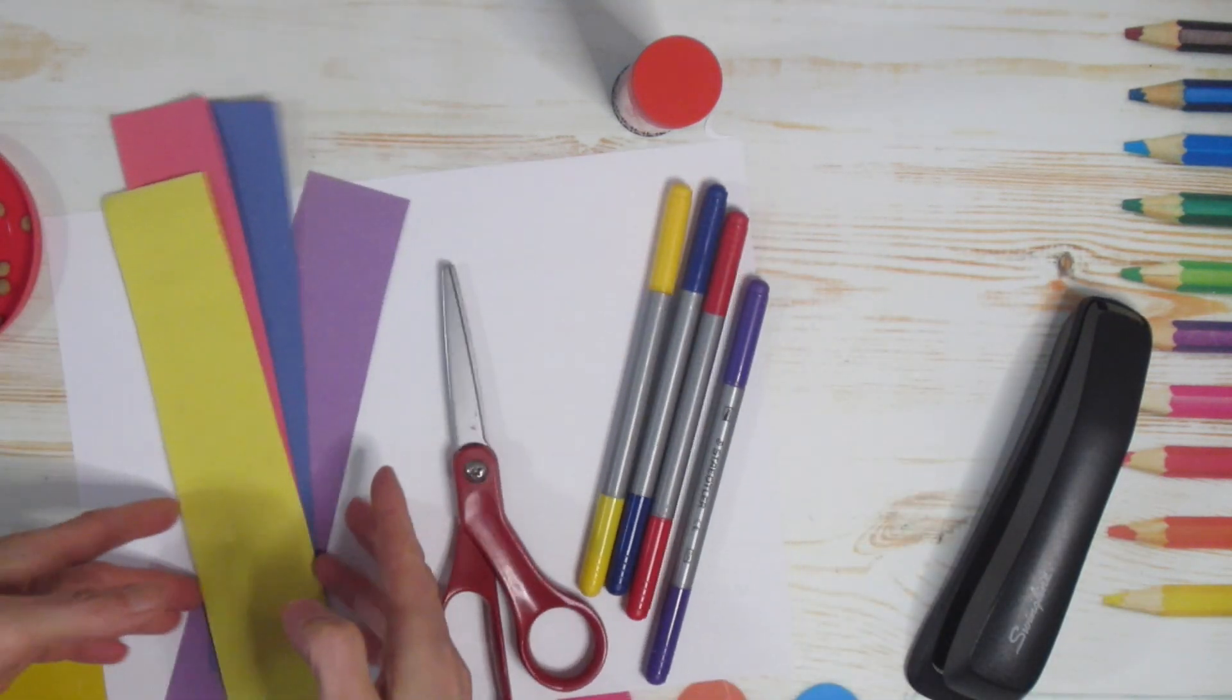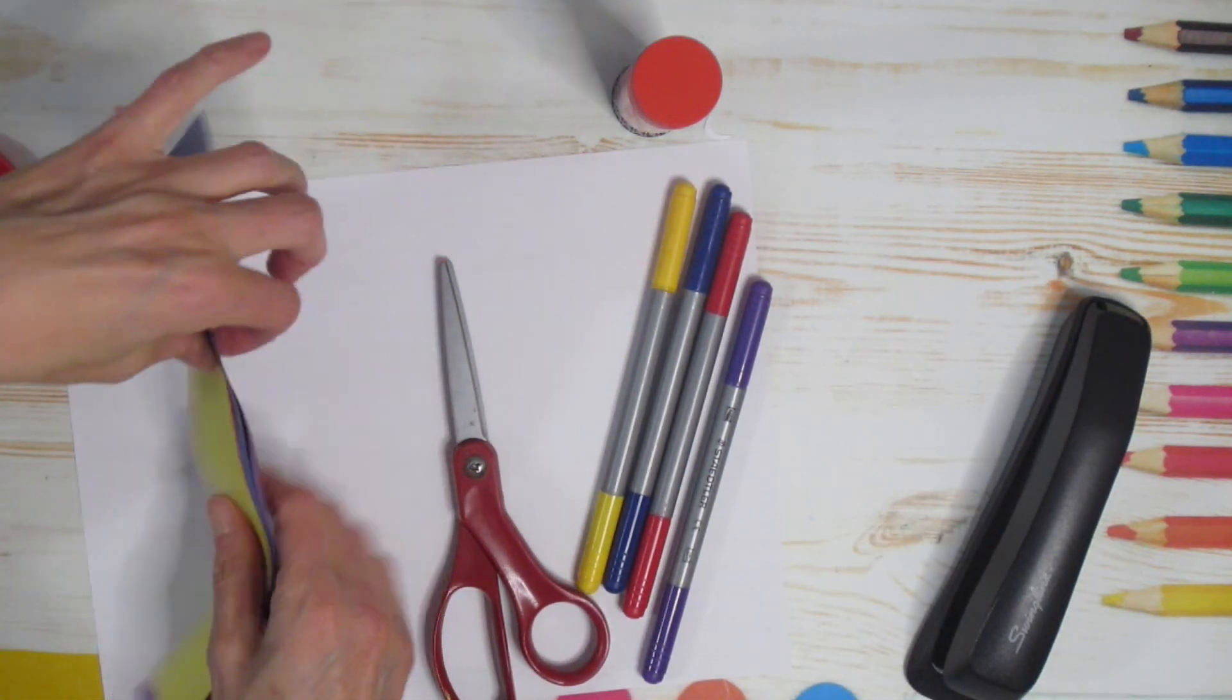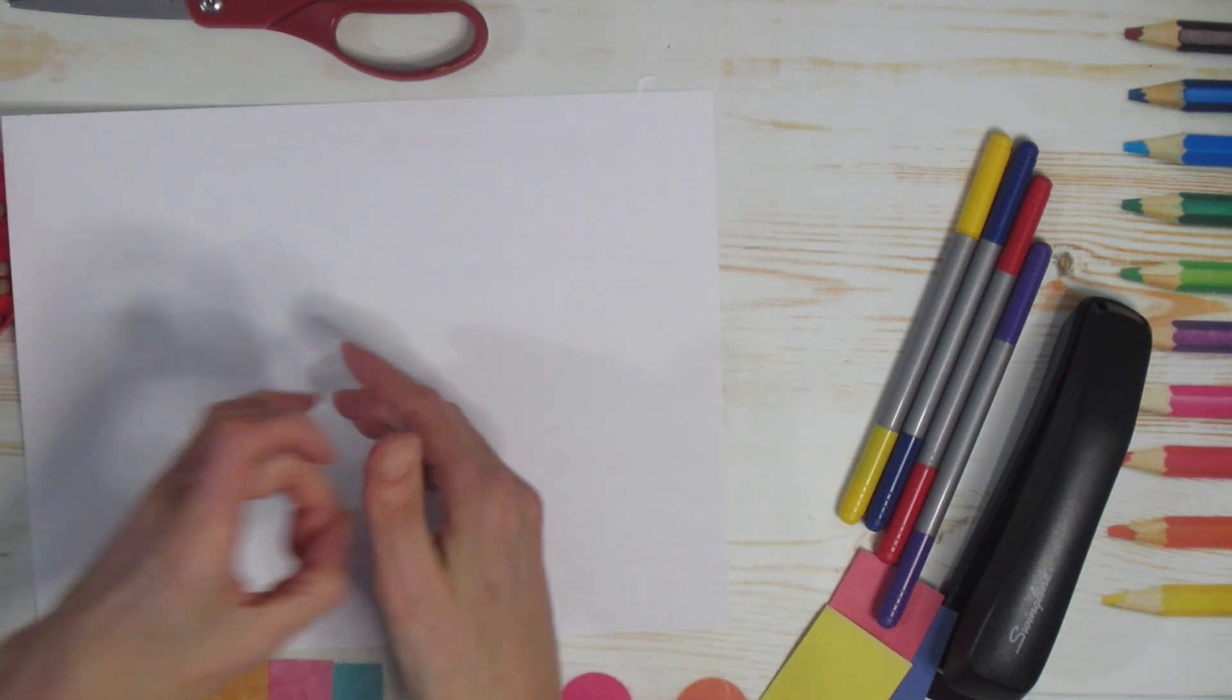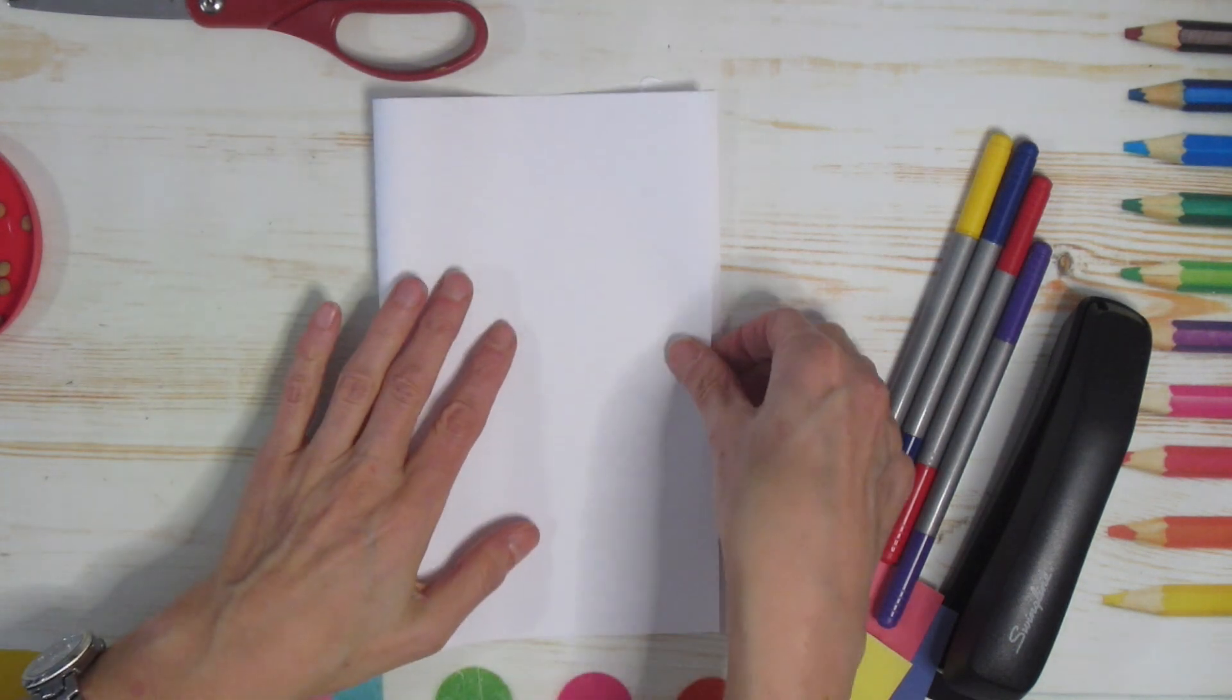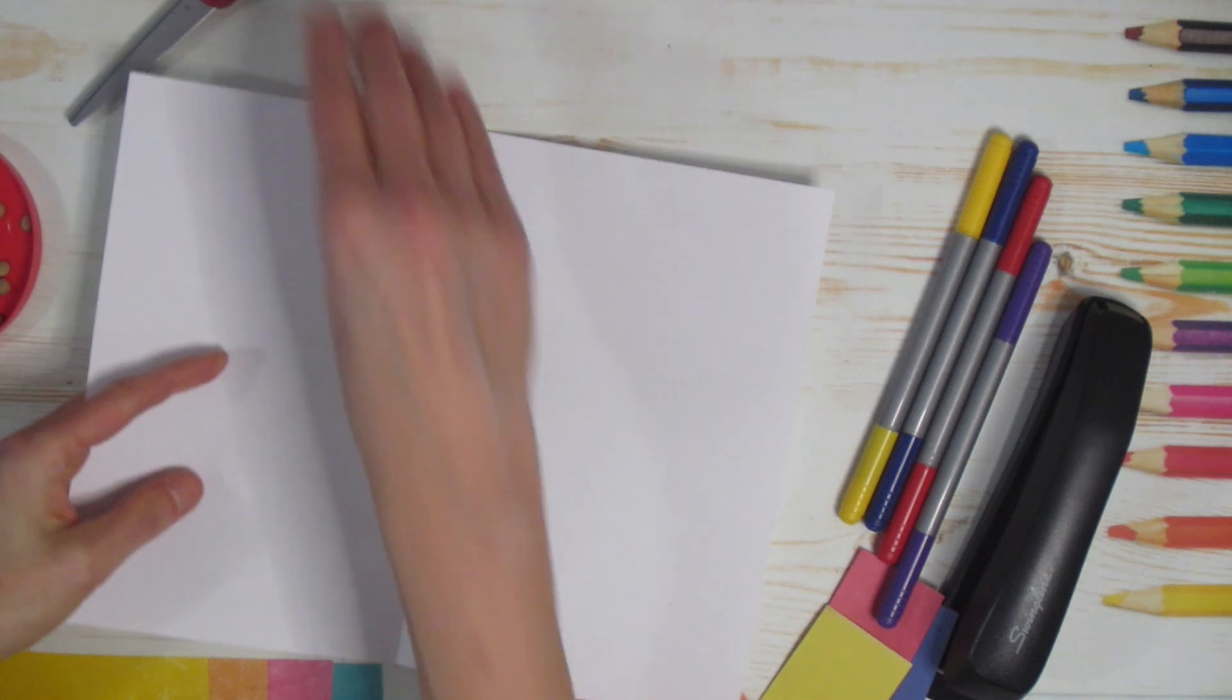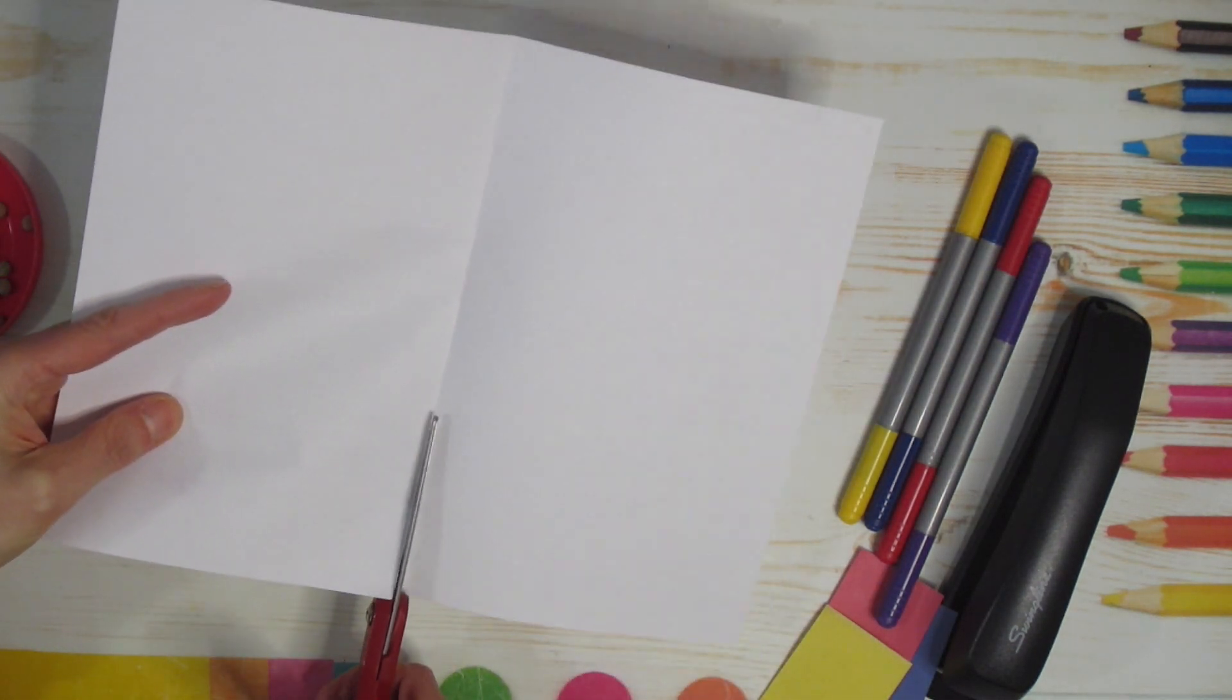The first thing I want to do is take my white piece of paper. I'm gonna take my white piece of paper in front of me long side left to right, short side top to bottom. I am gonna fold that over. I'm gonna create a little fold line right here and on that fold line I am going to cut it out because I only need half of this page.